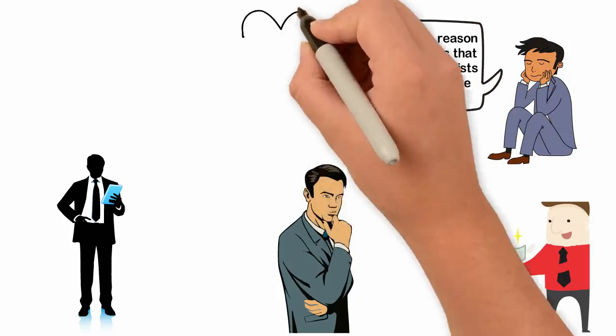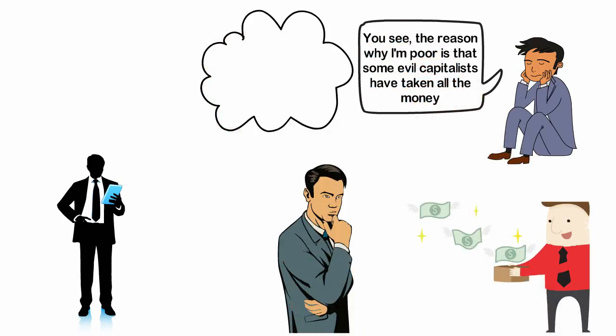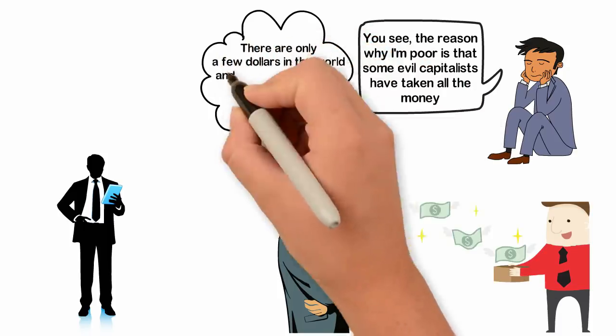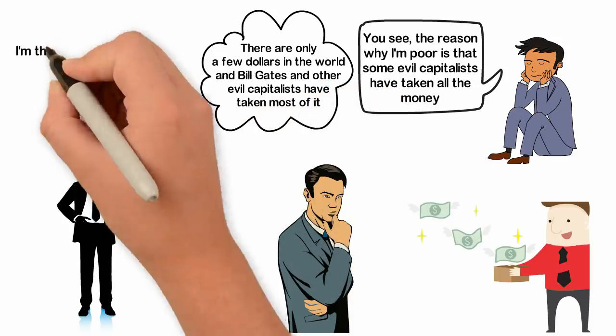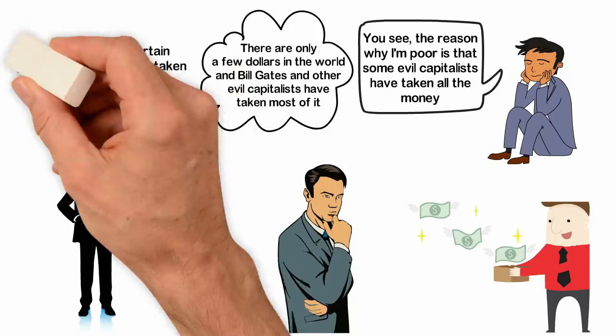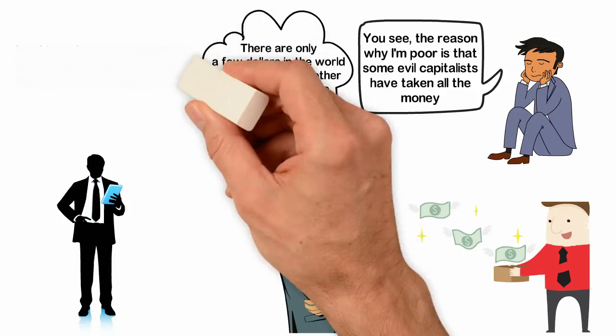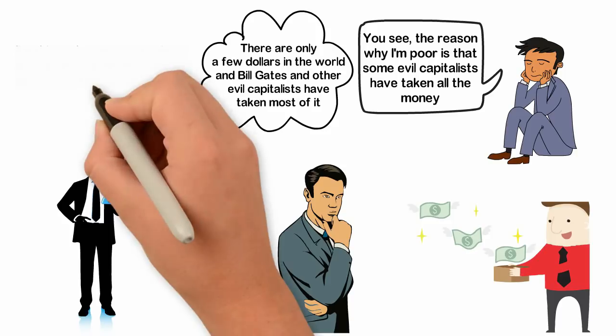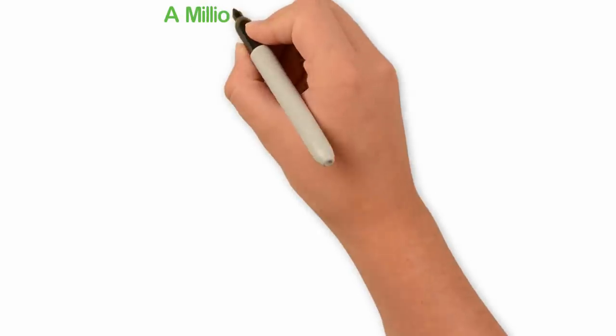You see, when you believe the reason why you're poor is that certain individuals have taken all the money, what you're essentially saying is that there are only a few dollars in the world and Bill Gates and other evil capitalists have taken most of it. That's like saying, I'm thirsty because certain greedy individuals have taken all the water to themselves. No, nobody is powerful enough to take all the water to himself. Yes, a lot of people are greedy. Yes, a lot of capitalists are greedy. But guess what? $4 trillion roam around the world every 24 hours and no matter how greedy some people are, there is still a lot of money you can make.